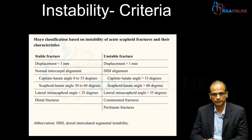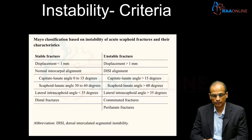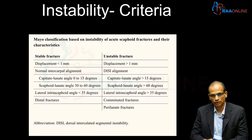The Mayo classification is based on the stability of the fracture. The table shows what constitutes a stable versus unstable fracture. By definition, an unstable fracture has displacement of more than one millimeter, carpal malalignment — such as dorsal lunate tilt on the lateral view — a capitolunate angle greater than 15 degrees, a scapholunate angle greater than 60 degrees, or a lateral intrascaphoid angle greater than 35 degrees, indicating humpback deformity. Fractures combined with perilunate dislocations are also considered unstable.